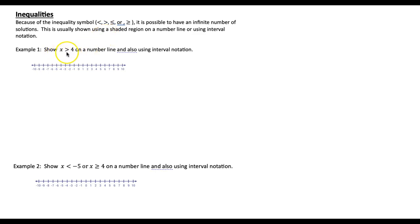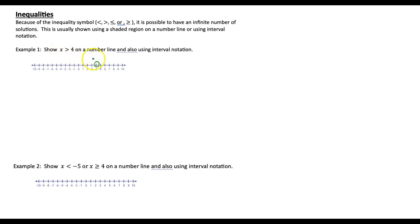Let's show x is greater than 4 on a number line, and then we'll also show that using interval notation. Finding 4 on a number line, we could either use a parentheses or an open circle to show that we're not going to equal 4 but get very close to it. The values greater than 4 would be on the right-hand side, so the shaded region would have an open circle or parentheses at 4 and then shaded to the right.